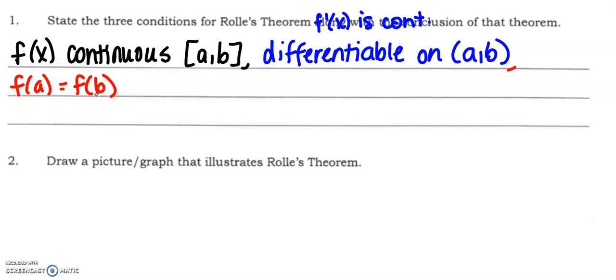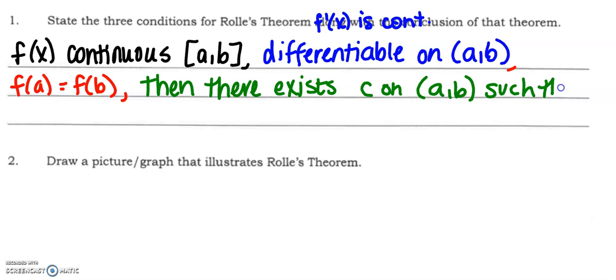The last thing then is f(a) is equal to f(b). So the heights at the endpoints are equal. Then there exists c on that open interval from a to b, such that f'(c) equals zero. Right? So we have a horizontal tangent because we're guaranteed to have a maximum and a minimum. So we're guaranteed to have at least one turnaround spot. And we turn around with a derivative equal to zero, a critical number.